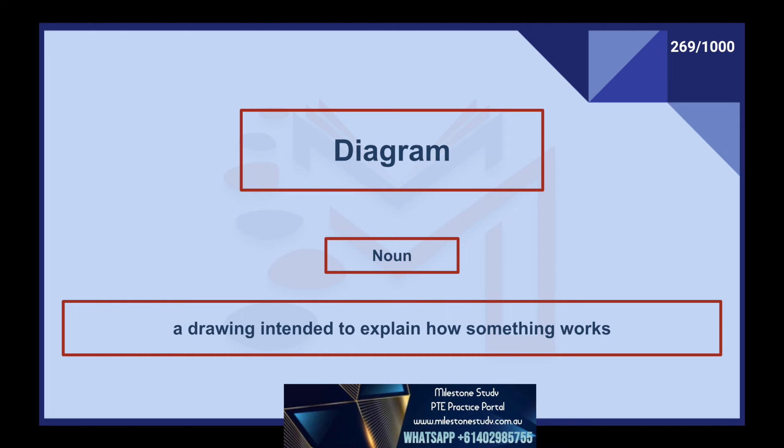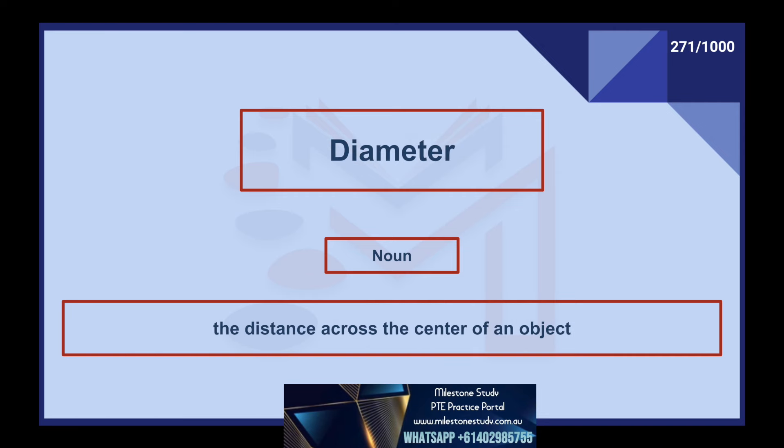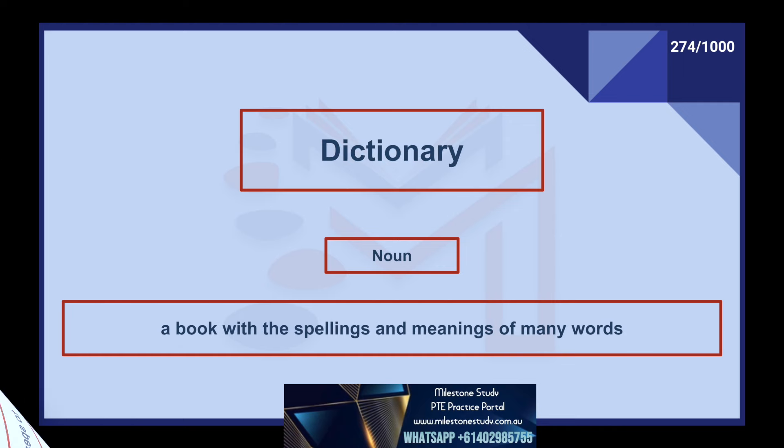Diagram, noun: a drawing intended to explain how something works. Dialect, noun: a way of speaking a language that is used only in a particular group. Diameter, noun: the distance across the center of an object. Dissociate, verb: disconnect or separate. Dictate, verb: to speak while another person writes the words down. Dictionary, noun: a book with the spellings and meanings of many words.